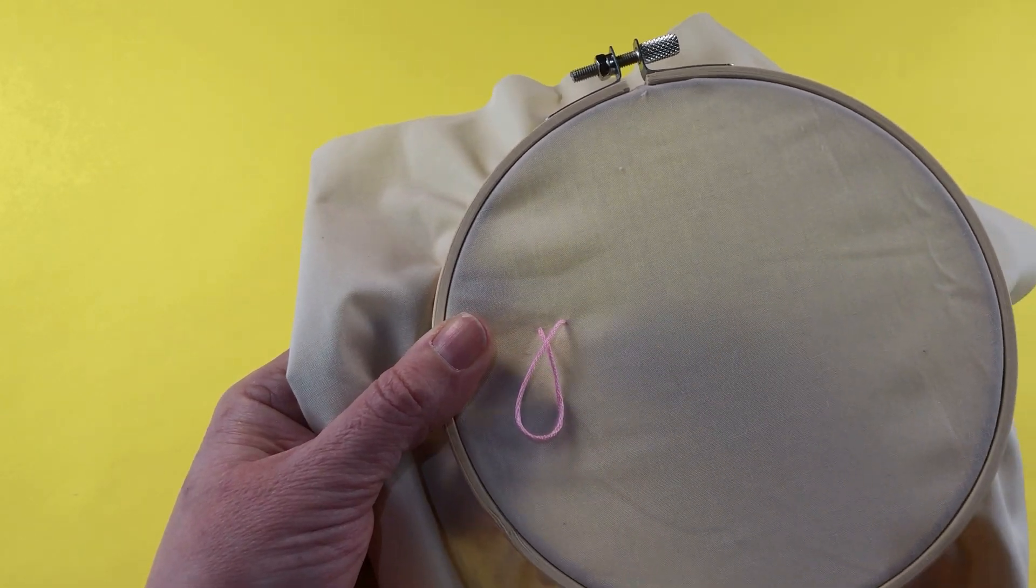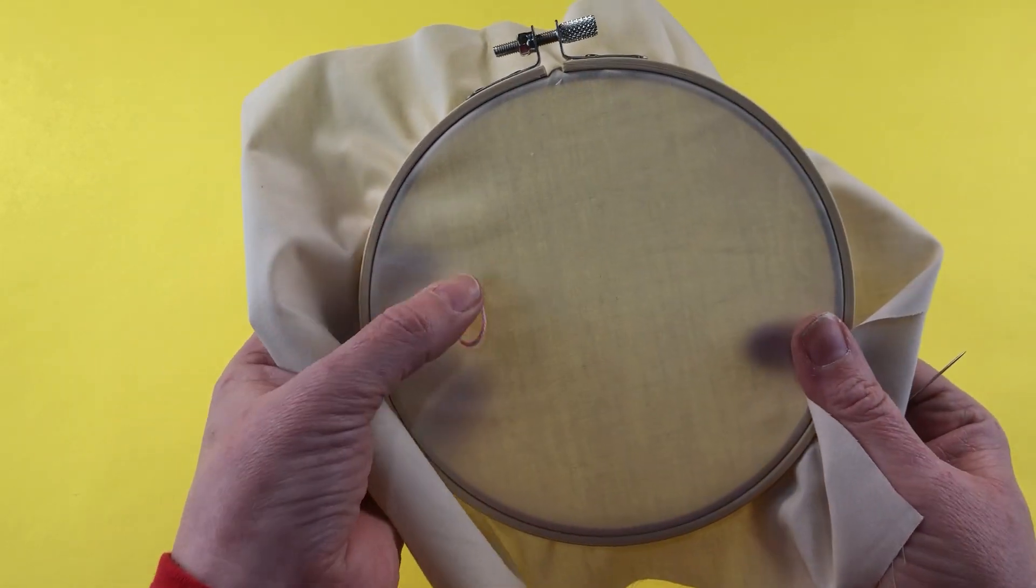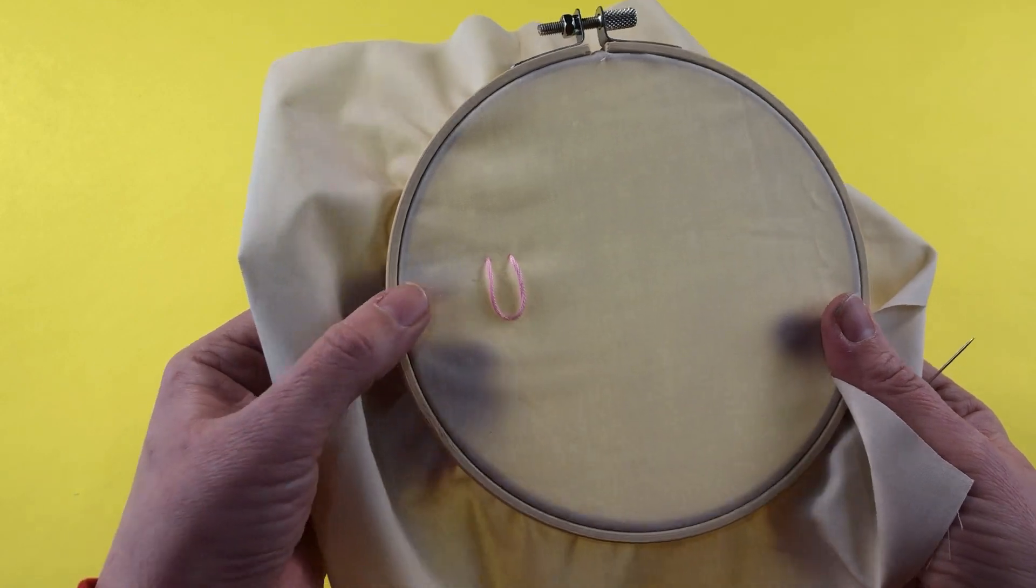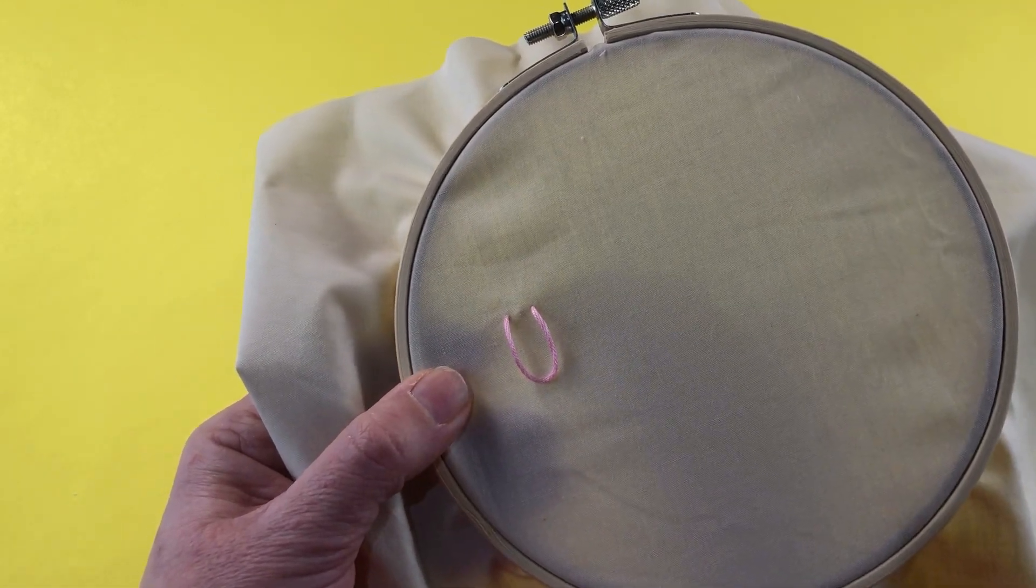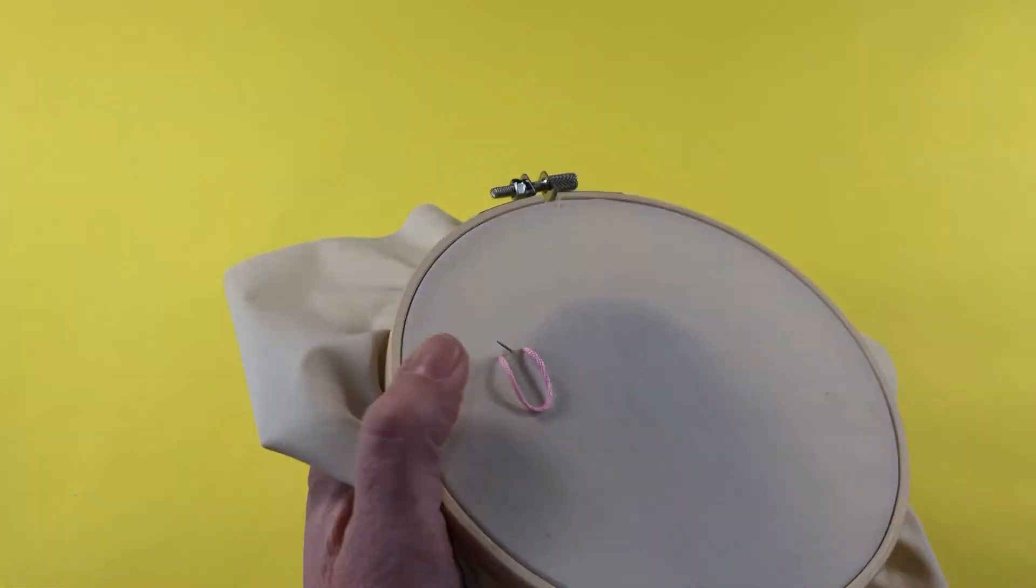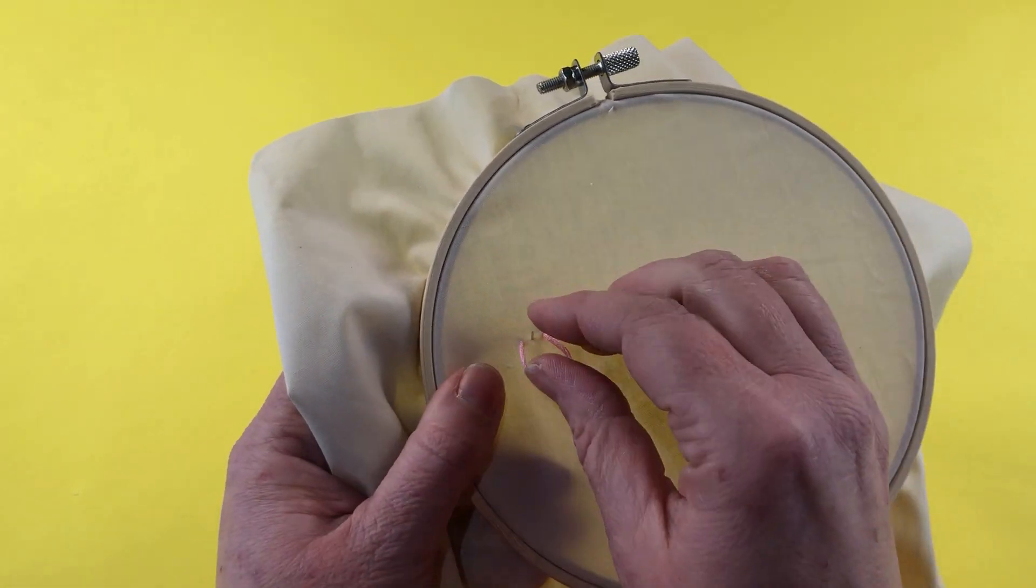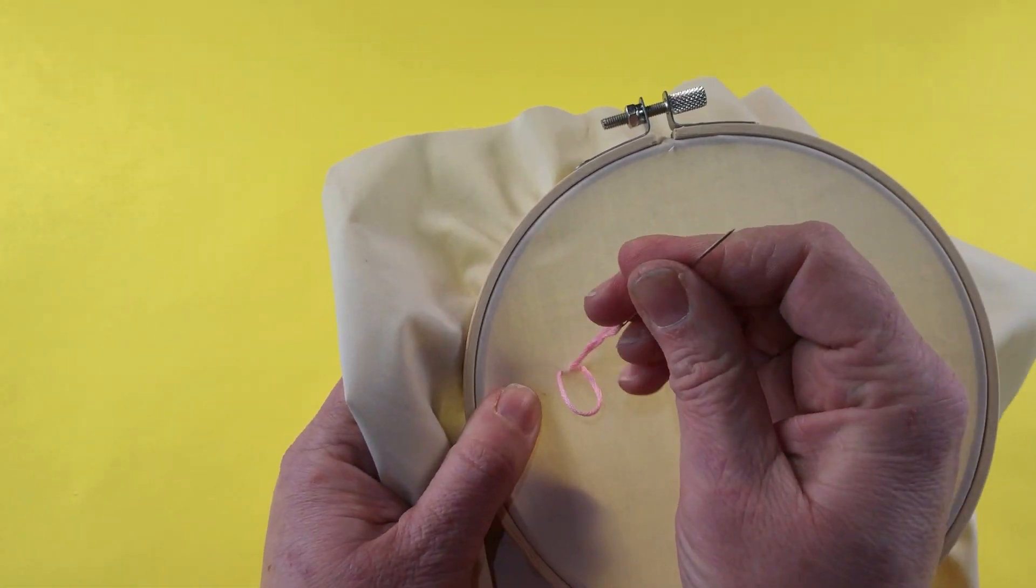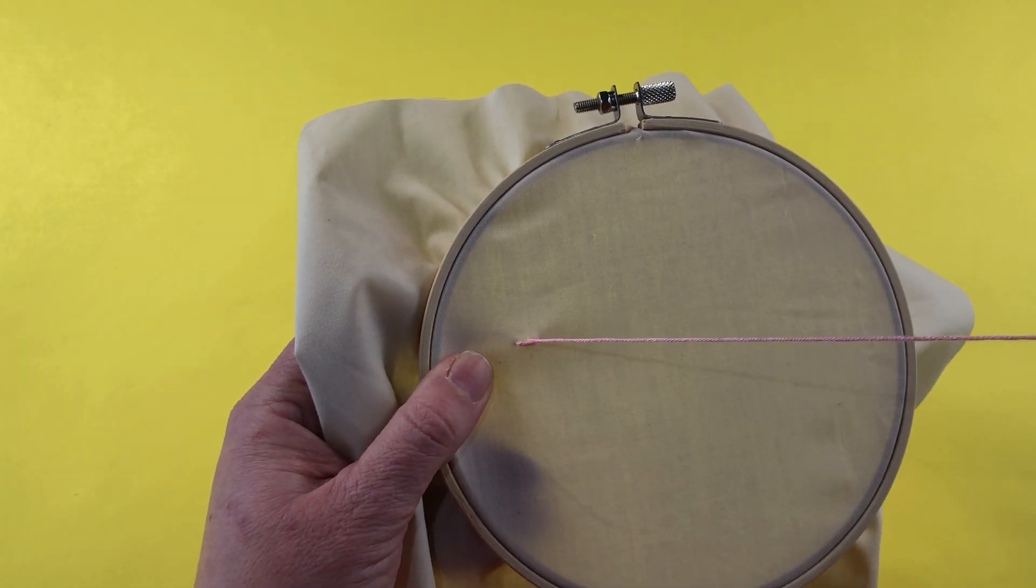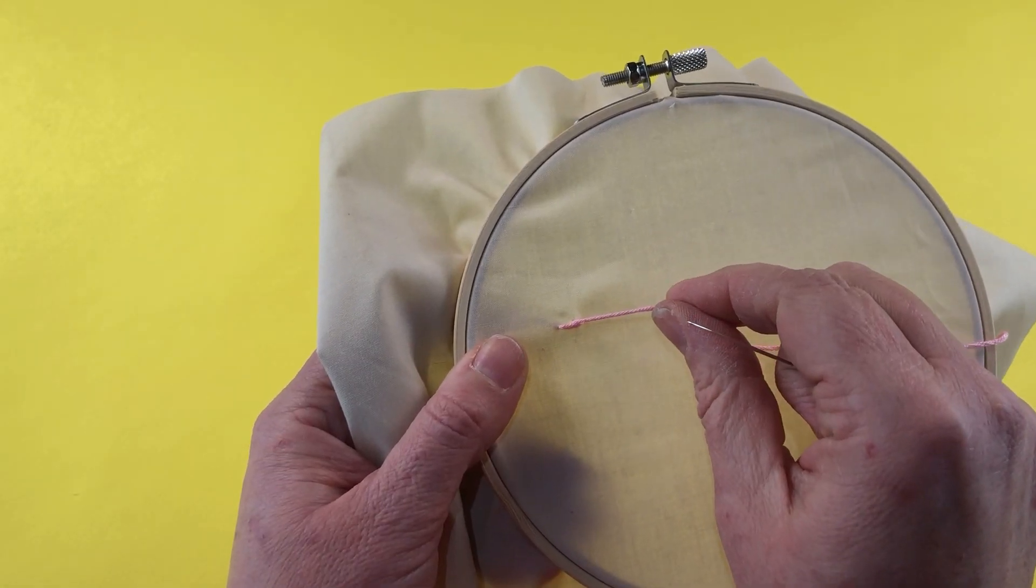We're going to pull the embroidery floss through but before it gets all the way through we're going to leave a bit of a loop, and then we're going to go halfway up through where the gap is in between the two pieces of embroidery floss. We're going to pull the needle through and then pull the embroidery floss tight.